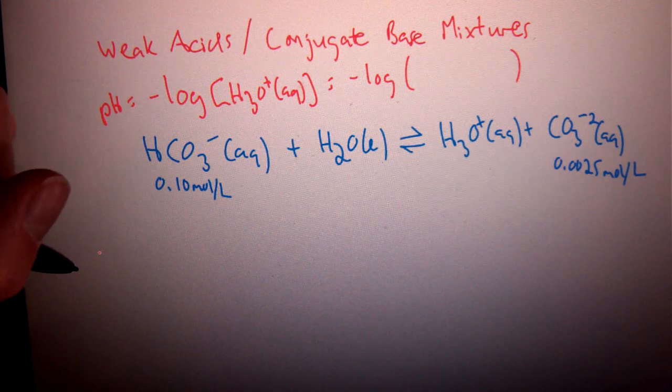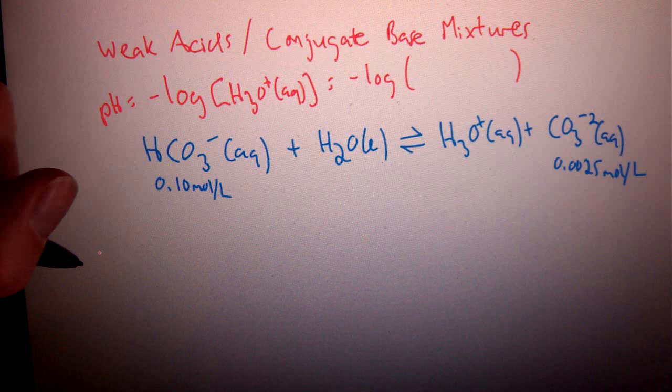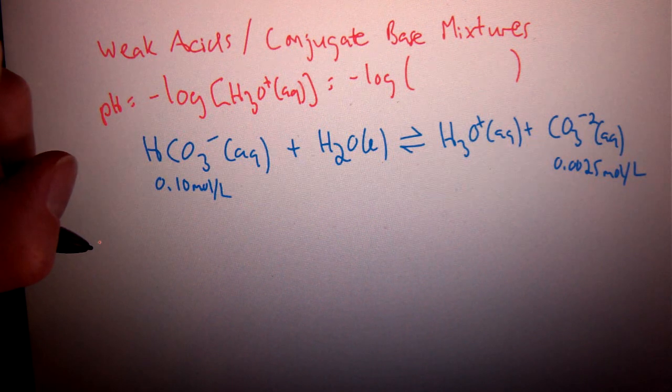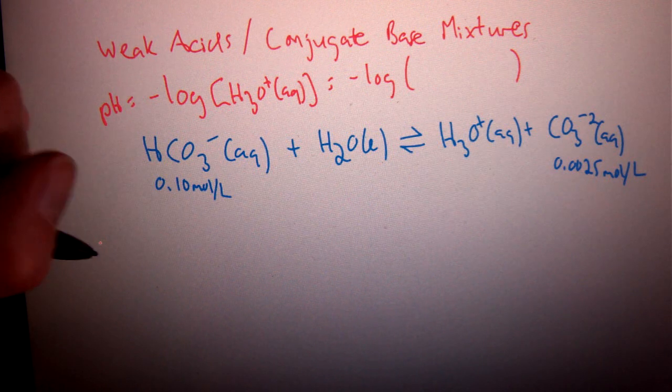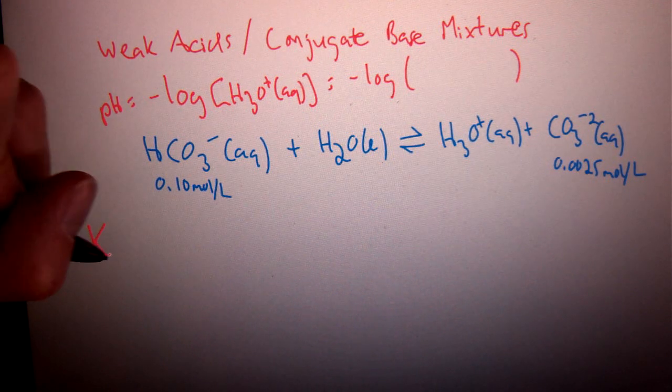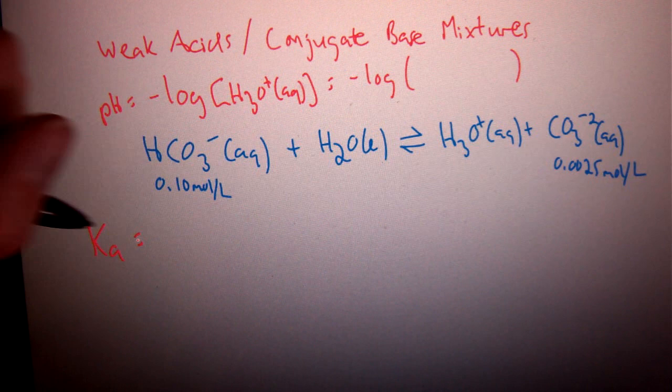However, with buffers, we don't want to go right into that shortcut. And that shortcut I'm referring to is where we utilize the square root of Ka times the acid concentration. Don't use that. But, we will start a similar way in that we want to write out our equilibrium law.